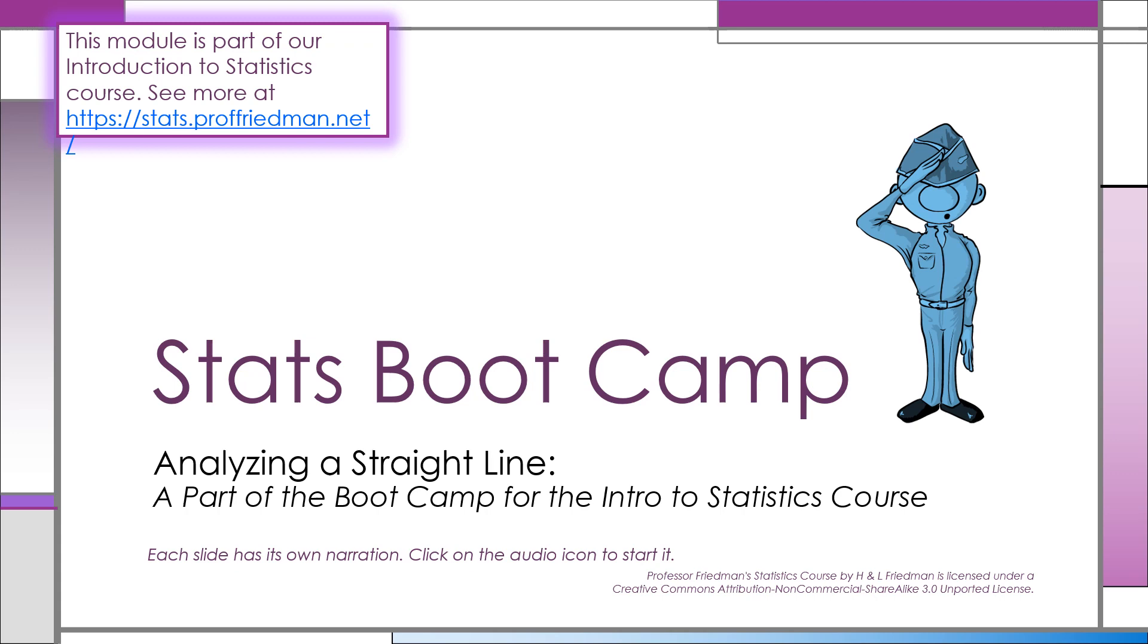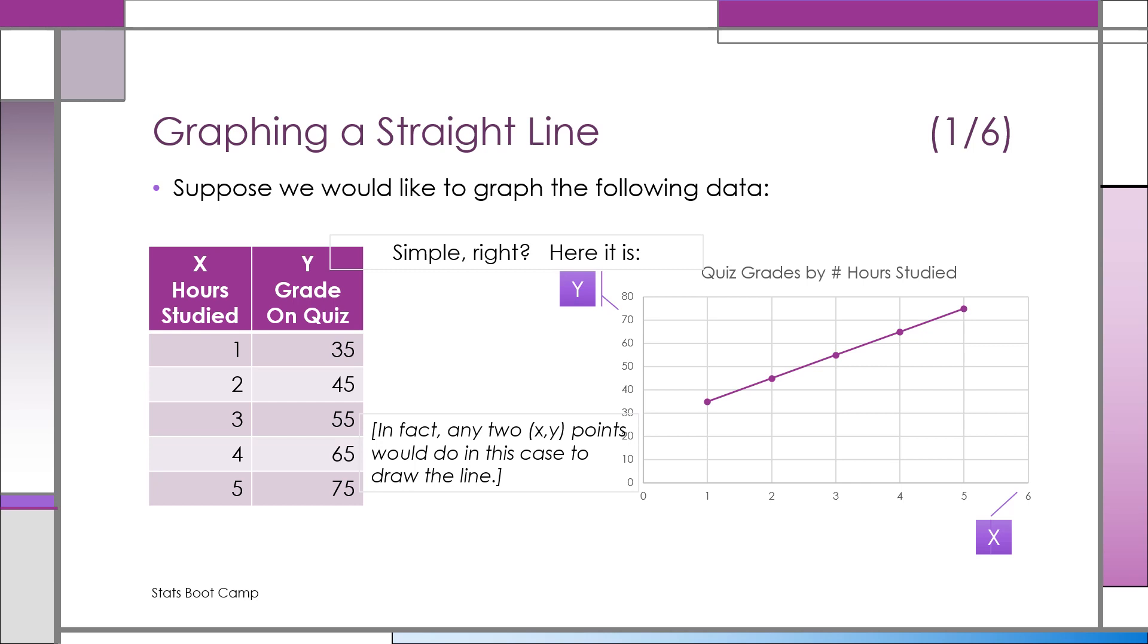What does a straight line mean? In this example, we see our study, that's X, and Y is the grade on a certain quiz. This actually turns out to be a straight line. In a moment, you'll see how we know it's a straight line, but we plot it for you on the right. And you see, these five points are exactly on a straight line.